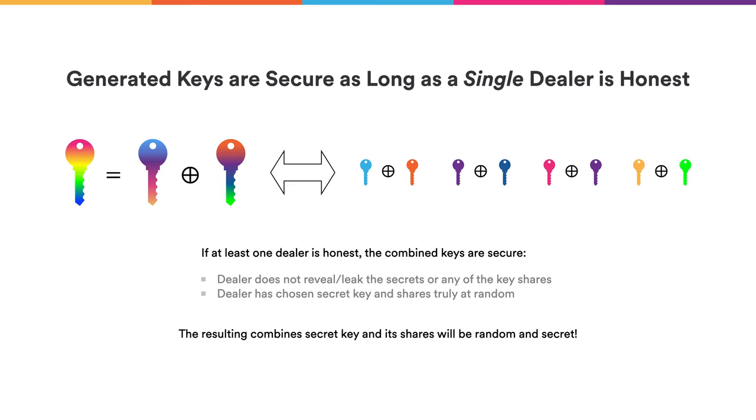Each node of the NNS subnet acts as a dealer, computes a sharing, and then together the NNS nodes combine those public keys into a single public key and certify it. Once all that material is computed, it is sent to the nodes forming the new subnet. They decrypt all of that, combine their secrets into a single secret key share, combine the public key to obtain the subnet's public key, and they are ready to start the new subnet.